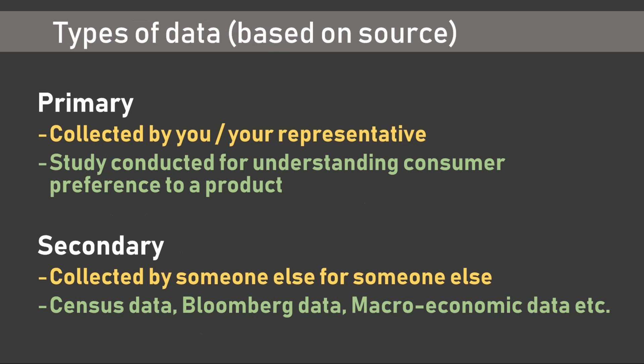Data can be classified based on the source from which it is obtained. When we or our representative collects data for a specific statistical question, such data is called primary data. For example, if we wanted to know consumer preference for a product we have manufactured, we would conduct an ad hoc data collection exercise across consumers. When we use data collected by someone else to answer our own statistical questions, we are dealing with secondary data — such as census data, stock price data from Bloomberg, or macroeconomic data collected by the government or a central bank.